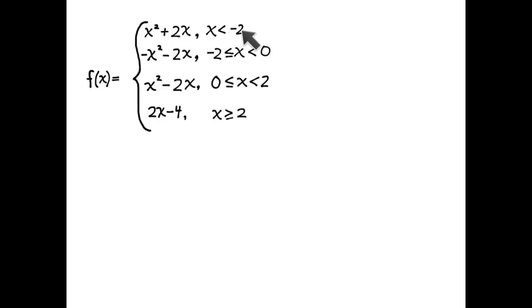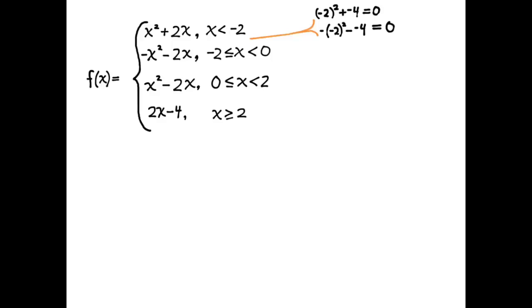I'll determine what the limit of f of x from the left and the right are by substituting negative 2 into each expression. When I substitute negative 2 into x squared plus 2x, I get 0. When I substitute negative 2 into negative x squared minus 2x, I also get 0. The function has a limit of 0 from the left and from the right, and since f of negative 2 is also equal to 0, f is continuous at that first junction point negative 2.